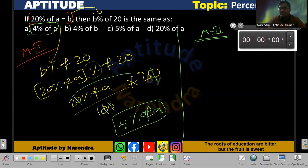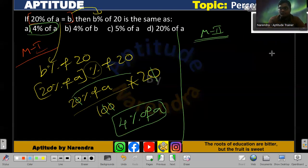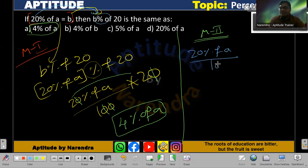How can we make it more simple? Observe here. What they've given: 20% of a is equal to b. If you write directly in the same statement, 20% of a—for this percentage, if you know how to write it...